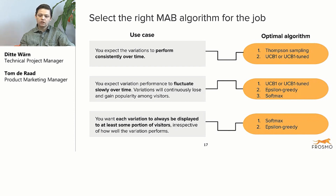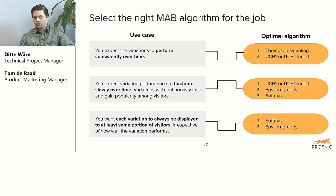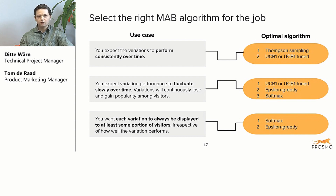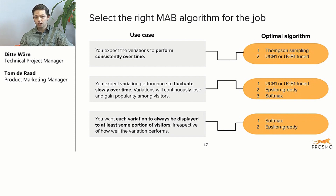On the other hand, there are cases where you expect variations to fluctuate slowly over time — for example, due to seasonality, different clothes, or different colors being in season. In these cases, you would use an algorithm that always assigns some traffic to those variations that aren't performing great right now, but could be in the future. Then there's a hybrid case where you're pretty sure one variation is better now, but it's always good to keep on testing, so you always assign a little traffic to those variations that could pick up. Another thing you can do is drop out variations that perform poorly and replace them with something else — see if something new performs better and if you can find a new winner. Working this way, you can keep Multi-arm bandit experiments running indefinitely.